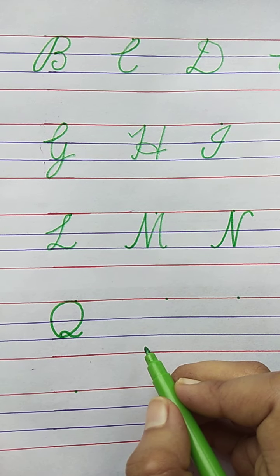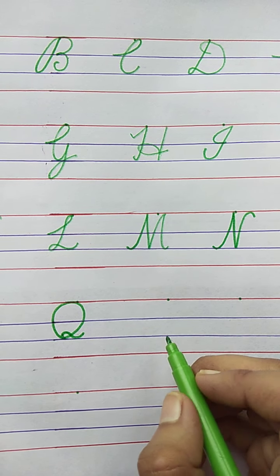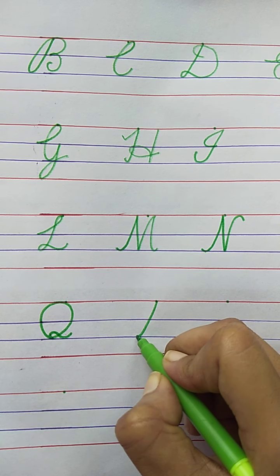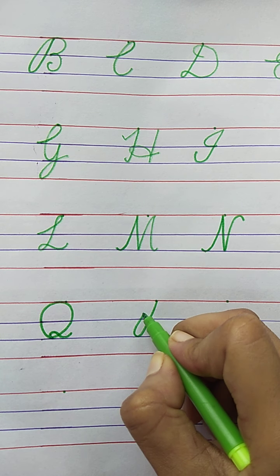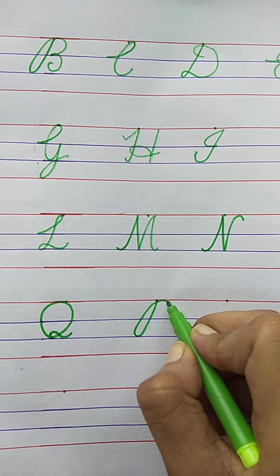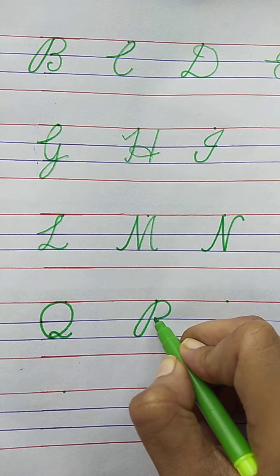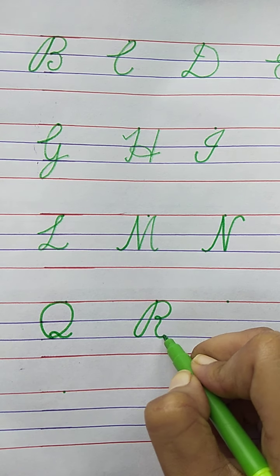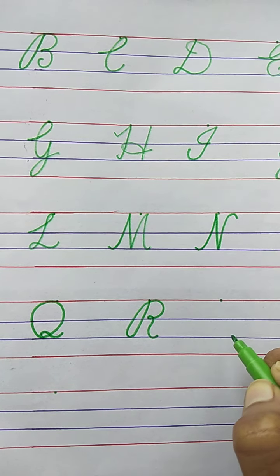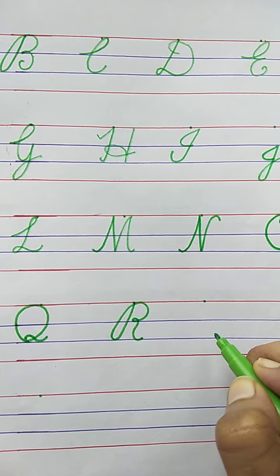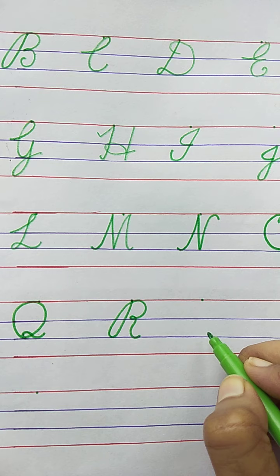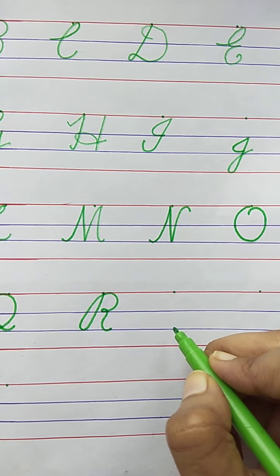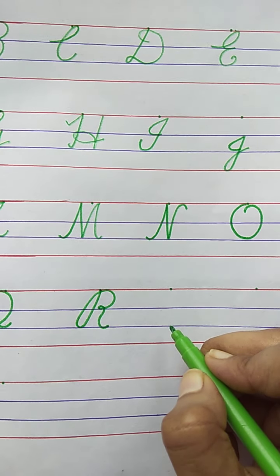Now, the next letter. R. R for Rabbit. Two slanting lines, semi-circle, and a curve. R for Rabbit. The spelling of Rabbit is R-A-B-B-I-T. Rabbit.